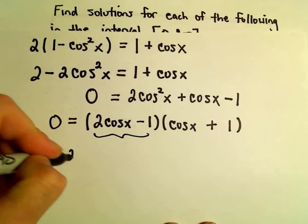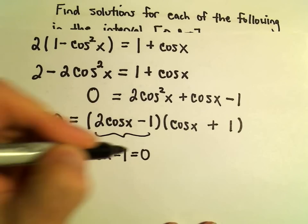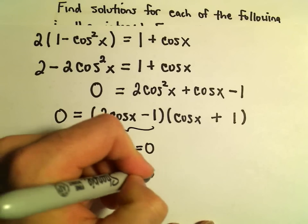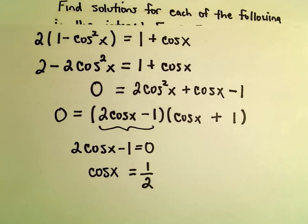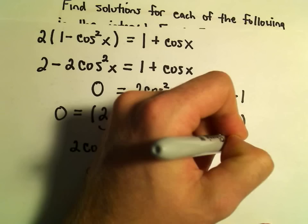Once we have it factored, we just set each factor equal to 0. Here I can add 1 and divide by 2, and then we'll be left simply with cos x. If we set our second factor, cos x + 1 equal to 0, we'll simply get cos x = -1.